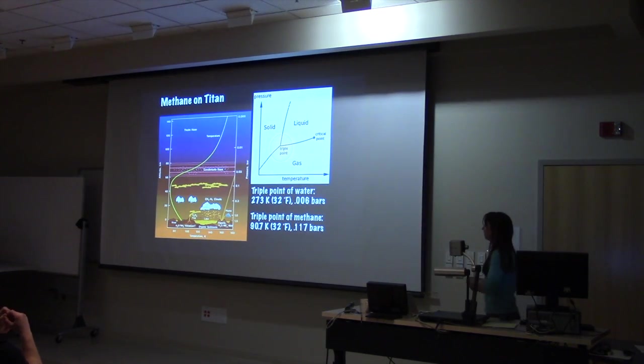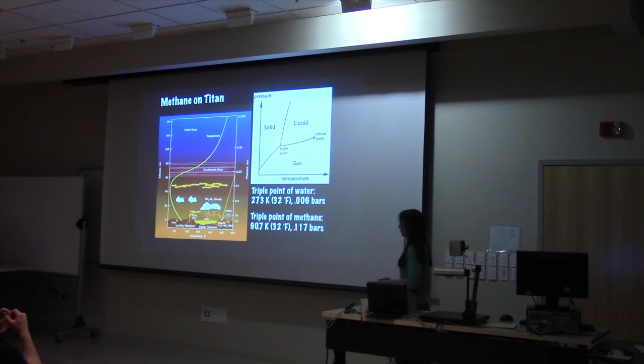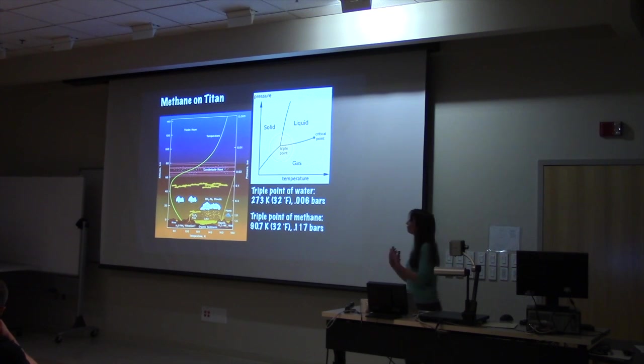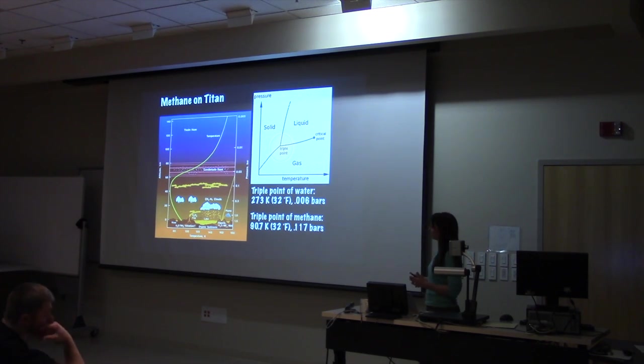There's something else we also knew though. So we knew about the composition from Voyager and the temperature of Titan's atmosphere. Titan's atmosphere is mostly made of molecular nitrogen, but it's about 5% methane.